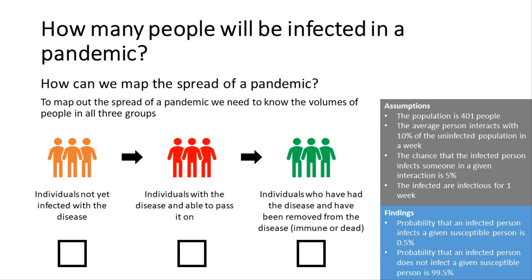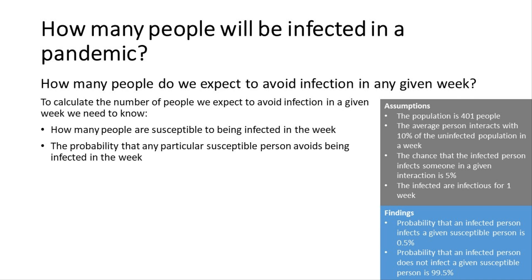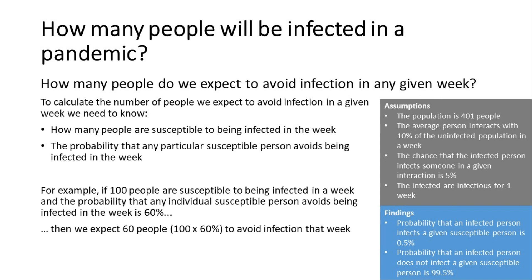To map out the pandemic, I need to know the volumes of people in all three groups at all points in time: those not yet infected, those currently infected and able to pass it on, and those removed. The first question is how many people do we expect to avoid infection in any given week. To calculate this, we need to know how many people are susceptible and the probability that any particular susceptible person avoids infection. For example, if 100 people are susceptible and the avoidance probability is 60%, we expect 60 people to avoid infection.